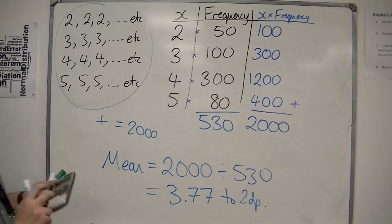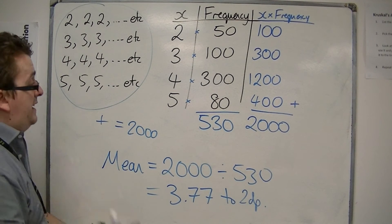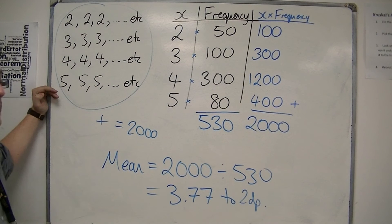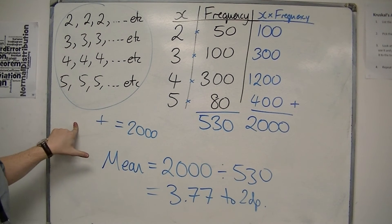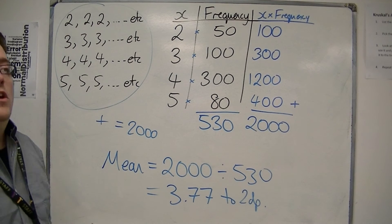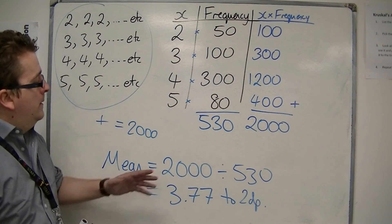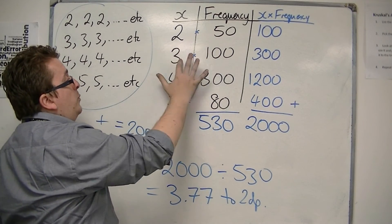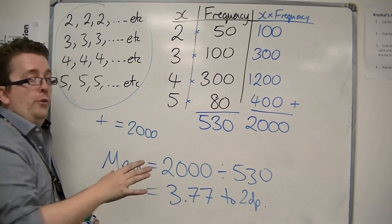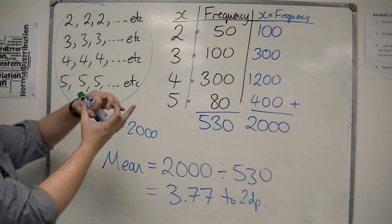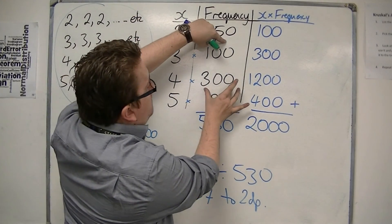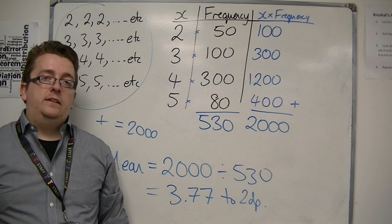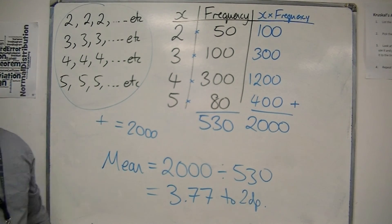Now, does that make sense — three point seven seven? Well, it certainly does make sense. It is, first of all, a number between two and five. You would expect that; if you'd got something like ten, there are no tens in your list. So anything less than two or more than five would have been wrong — that's a very easy way to check. Now, three point seven seven: if you look at where the majority of the numbers are, the majority are between three and four. There are a hundred threes and three hundred fours, so that bulk is there, and you would expect your mean to be somewhere between three and four. So it does fit the data. That is how you work out the mean from a frequency table.